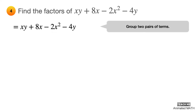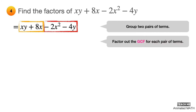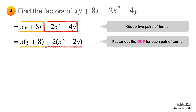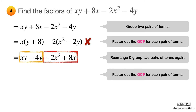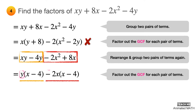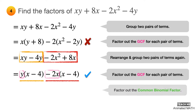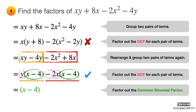Group two pairs of terms and work on them separately. The pairs of terms are shown using the orange and red boxes. Factor out the greatest common factor from each pair of terms. These GCFs are x and negative 2. Just like the previous problem, there is no common binomial factor again, so rearrange the terms and group two pairs of terms again. Factor out the GCF again from each pair of terms. These are y and negative 2x. There is now a common binomial factor, which is x minus 4. The more you practice factoring by grouping, the faster you can analyze which grouping is correct. The other binomial factor is y minus 2x, and the final answer is (x − 4)(y − 2x).